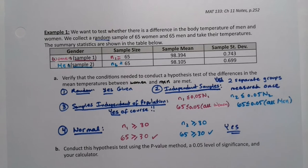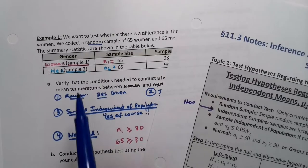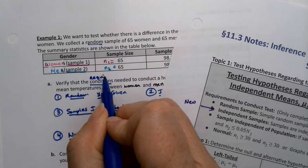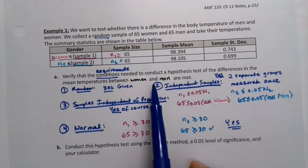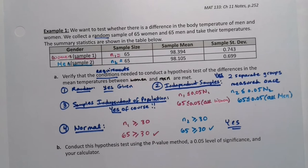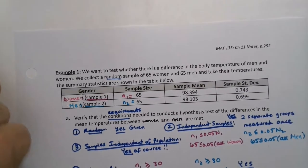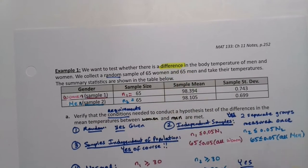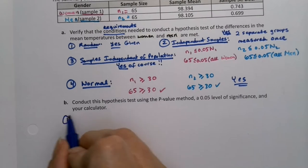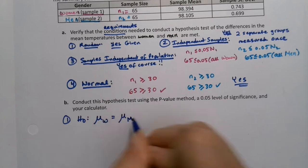We have random, independent, independent of the population, and normal — all four conditions verified. Now it's time to run the test. We want to test for a difference in mean body temperature between women and men. From the problem statement — 'test whether there is a difference' — step one of the hypothesis test: the null hypothesis is that the mean for women equals the mean for men.